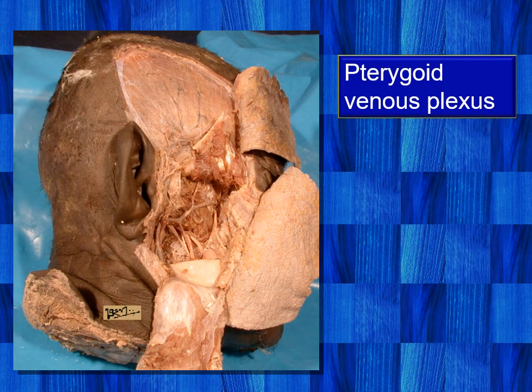The pterygoid venous plexus has been digitally created, as it is usually removed during routine dissections. It is located between the masticatory muscles, principally in and around the lateral pterygoid muscle. The deep facial vein connects it with the facial vein. It communicates with the cavernous sinus through emissary veins passing through the foramen ovale or foramen lacerum, and also communicates with the inferior ophthalmic vein through the inferior orbital fissure.